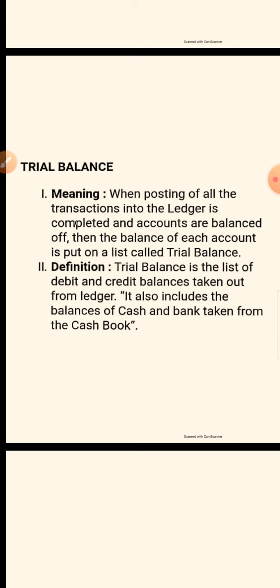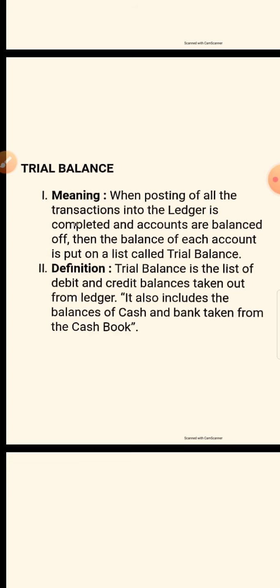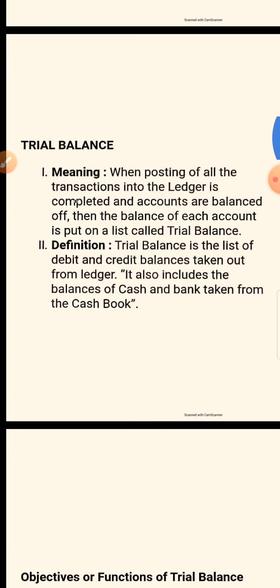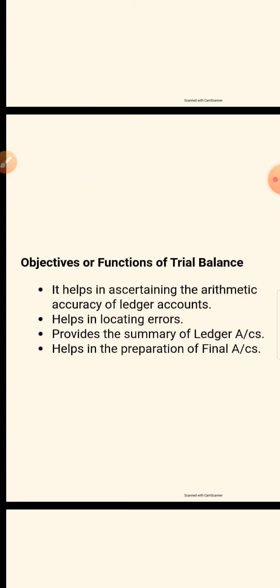My dear students, if you do the trial balance, then on one page every balance will come together — cash balance, bank balance, capital balance, machinery balance. Every balance will come on the trial balance on one page. The first definition is: it is a list of debit and credit balances taken from the ledger, which also includes balances of cash and bank from the cash book.